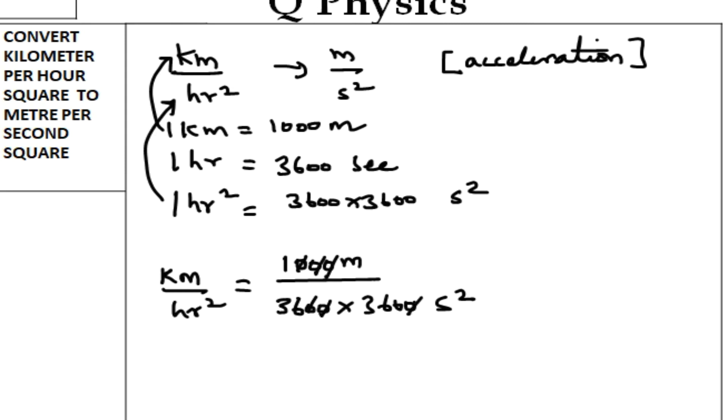I am going to get 1 by 36 into 360, which is 1/(36 × 360) meter per second square. Now we try to calculate this value.